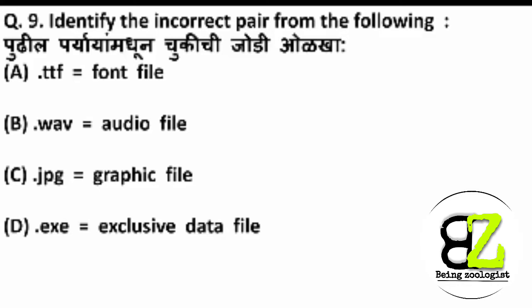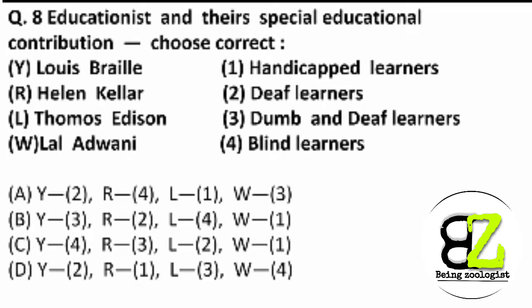Now, the correct pairs we should also remember, because they may come up in future questions. This is how we need to learn smartly — not just identify the wrong answer but also learn the right ones. This type of question is actually easy, because if we know even one or two of the pairs, we can arrive at the correct answer.